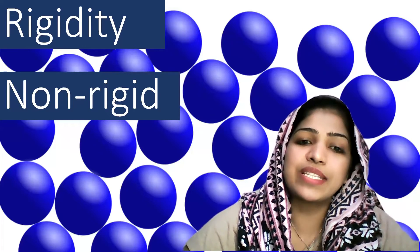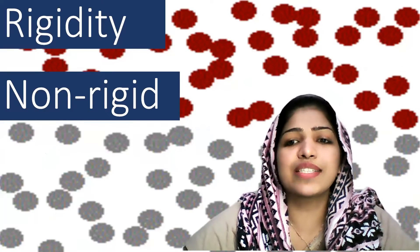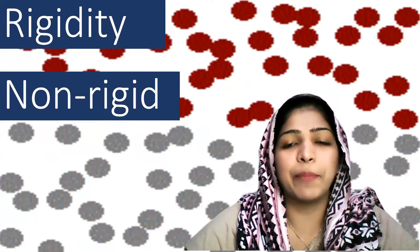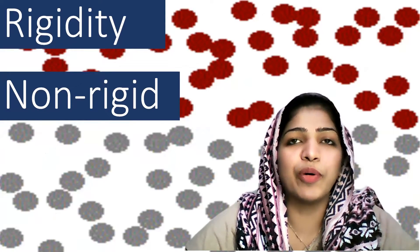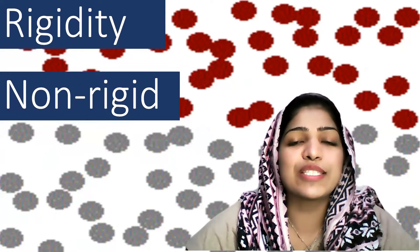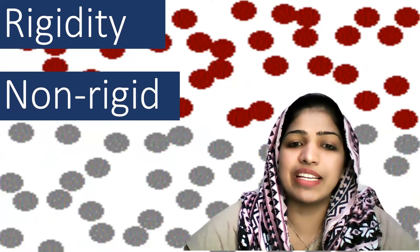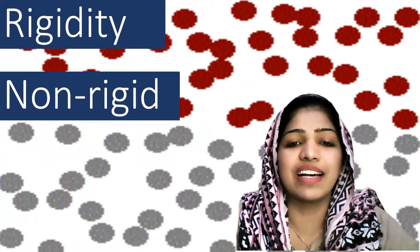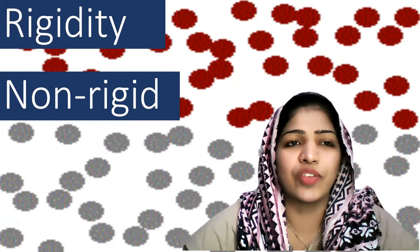Liquids are non-rigid. Gases are also non-rigid. Only solids are very rigid, whereas liquids and gases are non-rigid.